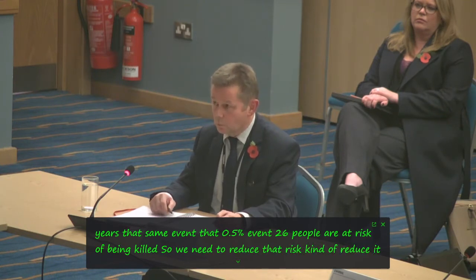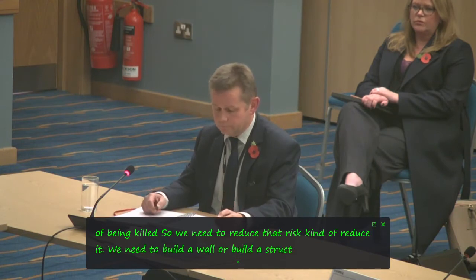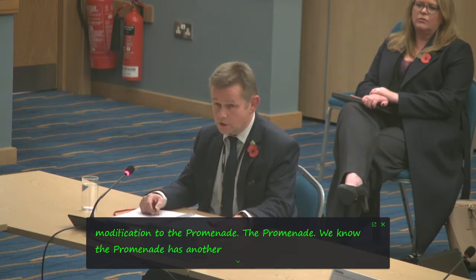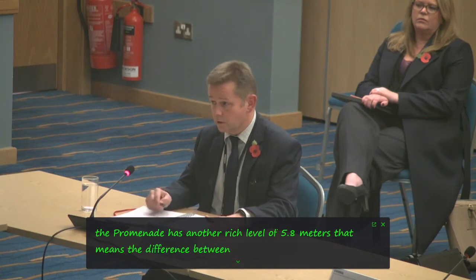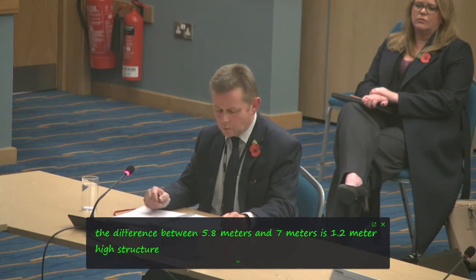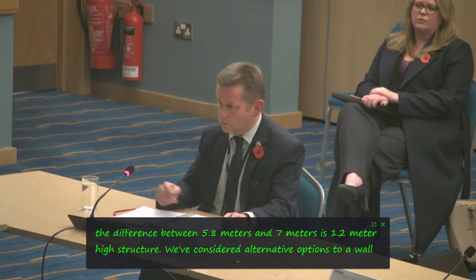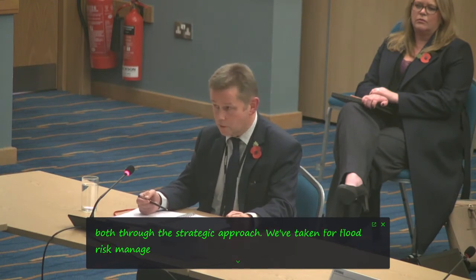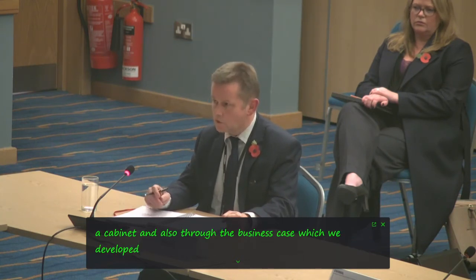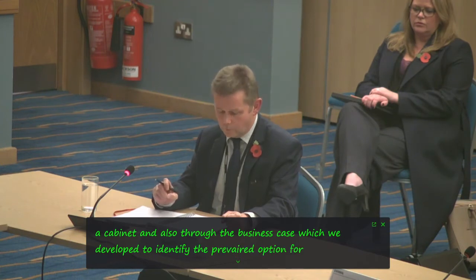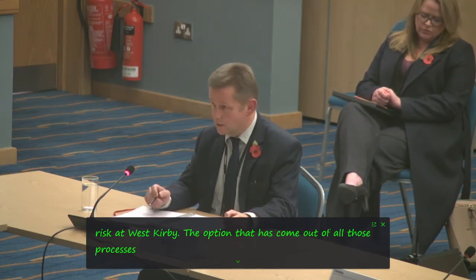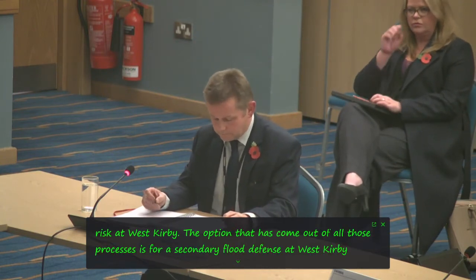To reduce that risk, we need to build a wall or make a modification to the promenade. The promenade has an average level of 5.8 metres. That means the difference between 5.8 metres and 7 metres is a 1.2 metre high structure. We've considered alternative options to a wall, both through the strategic approach we've taken for flood risk management and our coastal strategy, which is approved at Cabinet, and also through the business case we developed to identify the preferred option for reducing flood risk at West Kirby. The option that has come out of all those processes is for a secondary flood defence at West Kirby in the form of a wall.